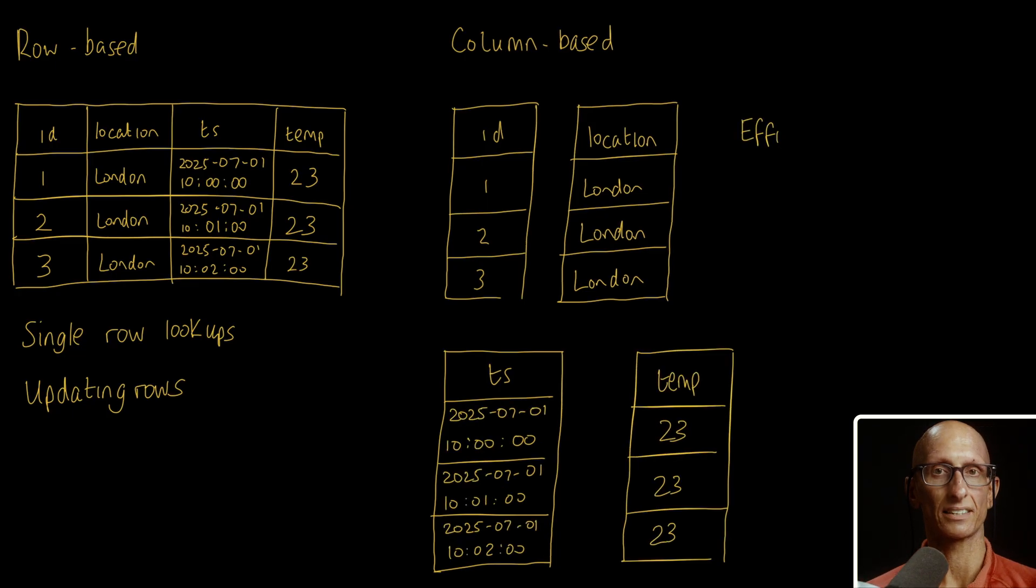Now one advantage of laying the data out like this is that we can store it more efficiently. So we can apply compression methods column by column, since the values in each column will likely be similar to each other.